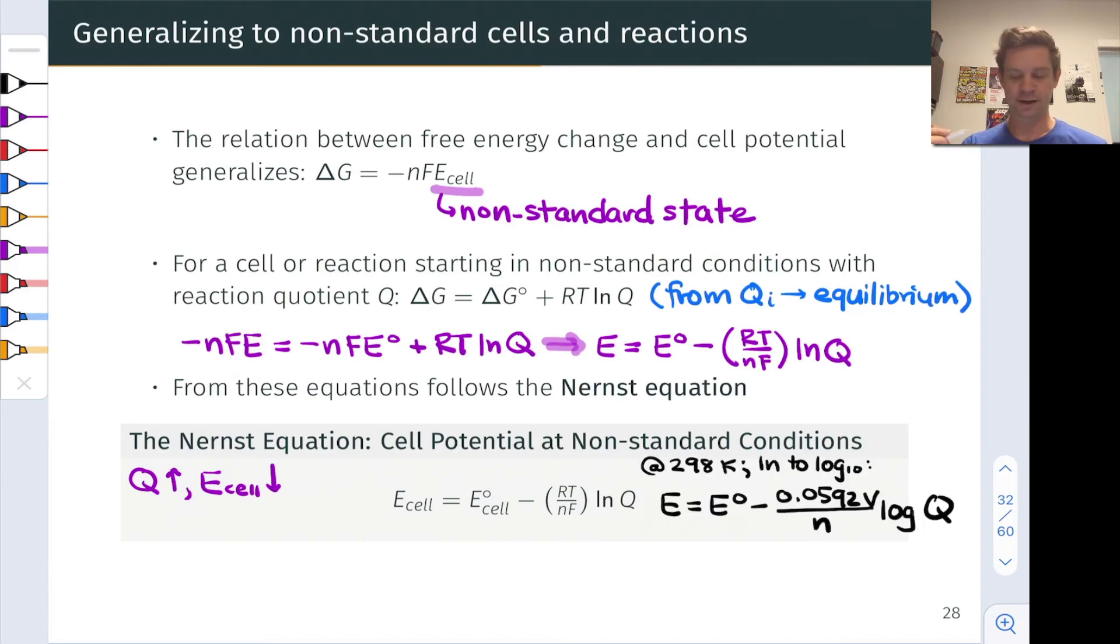Now to make the math a little bit easier I did want to show a version of the Nernst equation that is very commonly used under pretty normal looking conditions. When the temperature is 298 Kelvin and we change the natural log to a common or base 10 log we get that the cell potential under non-standard conditions is equal to the standard cell potential minus about 59.2 millivolts or 0.0592 volts divided by N the number of moles of electrons transferred times the base 10 log of Q.